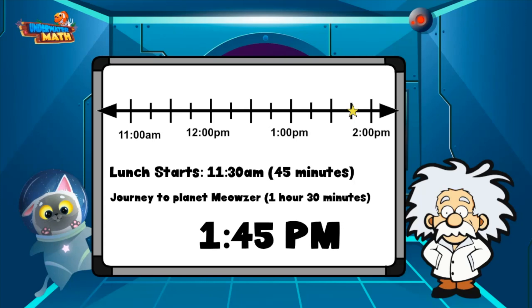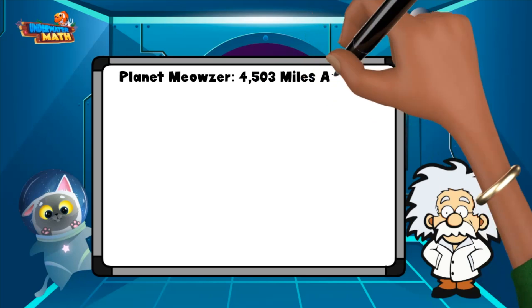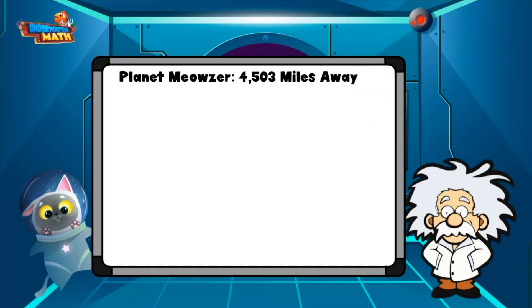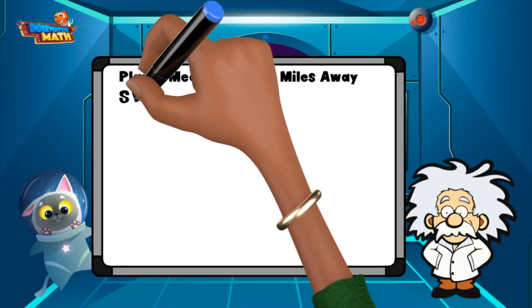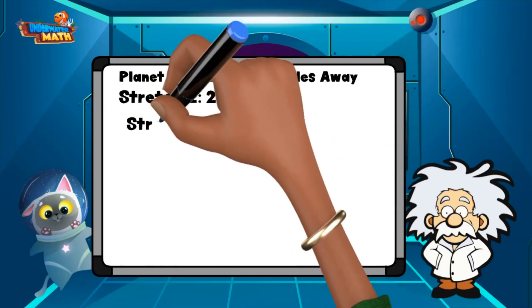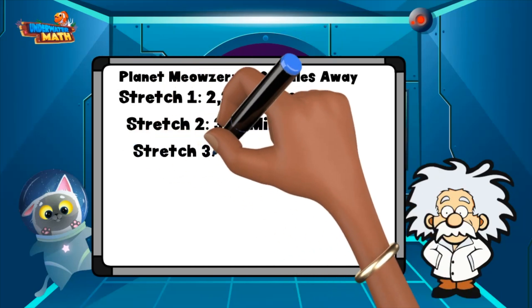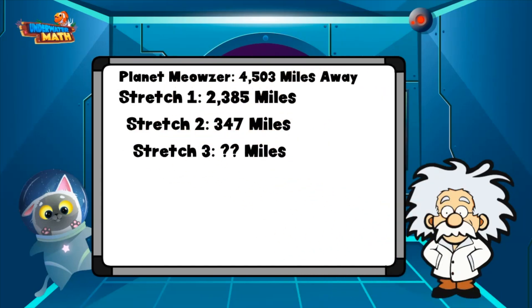Space cat will make it to planet Mauser at 1:45 PM. Next, we need to discuss the distance space cat is traveling. His planet is 4,503 miles away. He needs to travel 2,385 miles in the first stretch and 347 miles in the second stretch of travel. How many miles will he travel in the third stretch?